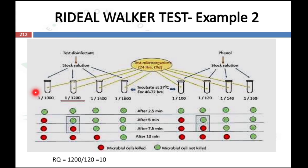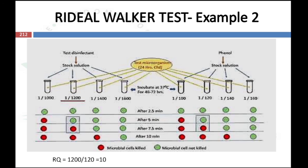Consider another example with test disinfectant dilutions 1/1000, 1/1200, 1/1400, and 1/1600, and phenol dilutions 1/100, 1/120, 1/140, and 1/160. Green indicates presence of growth; red indicates inhibition of growth. There is only one concentration at which all microorganisms are killed in 7.5 minutes and not in 5 minutes — that is 1/1200 for the test disinfectant and 1/120 for phenol. The Rideal-Walker coefficient = 1200 ÷ 120 = 10, again indicating 10 times more powerful than phenol.